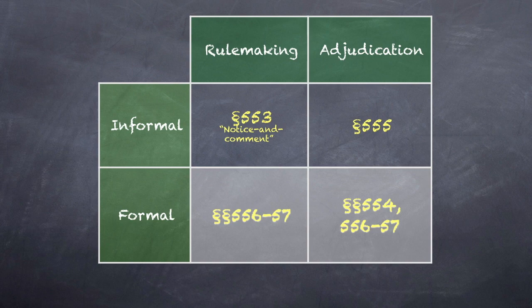It is important to know what is meant by 'formal proceeding.' The APA itself does not use the term 'formal,' but courts and administrative lawyers use it as shorthand for a proceeding required to be conducted according to section 556 and 557 procedures. By the same token, 'informal' has come to mean not subject to section 556 and 557 procedural requirements.